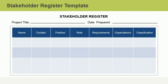Once you have gathered all the information about your stakeholders and have them classified, it's time to enter your information into a stakeholder register template. This template is a standard form with columns for each category of relevant information. As project manager, you may be required to create a template or you may have a standard template developed by your organization. If you don't have access to a standard template, consider using a previously completed stakeholder register from another project as a guide.